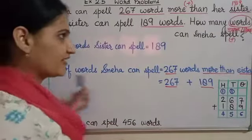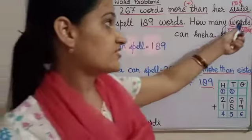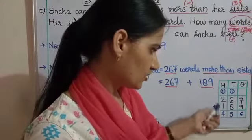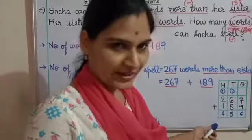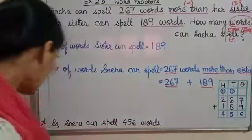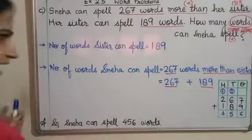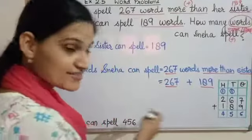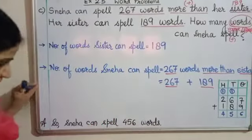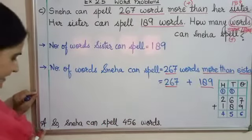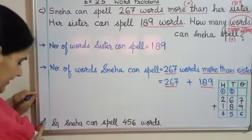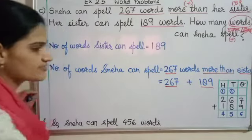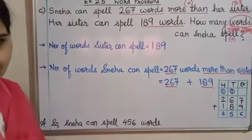So yehi hume find karna hai — how many words Sneha can spell — yeh aayega addition karke. Humne add kar liya — four fifty six is our answer. Yeh hi answer ko word problem mein hum statements ke roop mein likhein. So answer is: Sneha can spell four fifty six words.